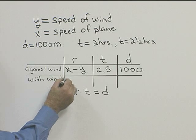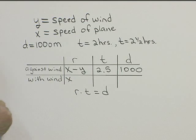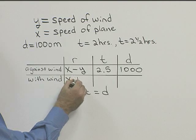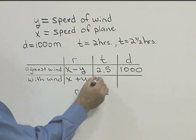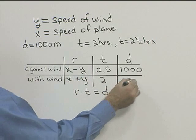Now with the wind, we know the speed of the plane is X, and this time the wind helps us so it's X plus Y, and it took two hours, and it's still a thousand miles.